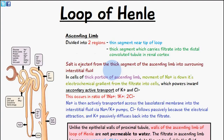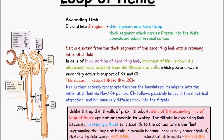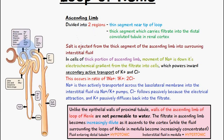The last few videos we've been talking about the proximal convoluted tubule and the loop of Henle, which is the part of the nephron after the proximal convoluted tubule. We can see this diagram here on the left which shows the nephron tubule. Here is the proximal convoluted tubule and then going down here is where we have the loop of Henle.